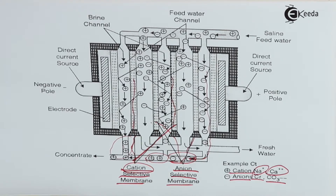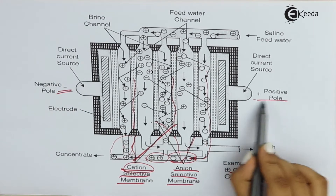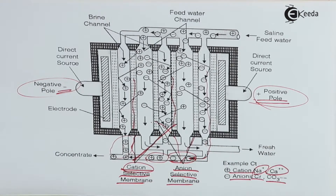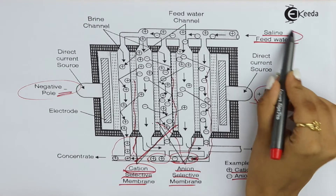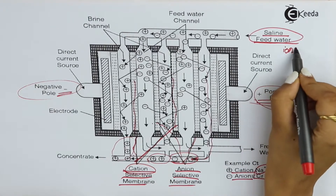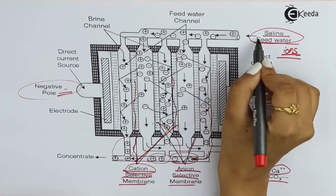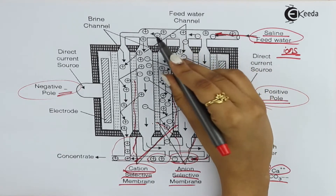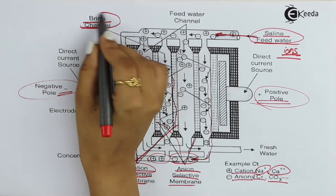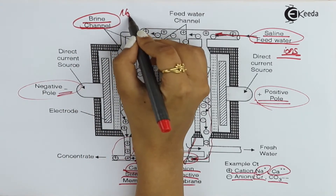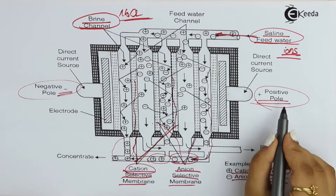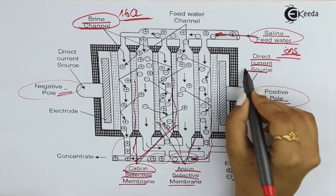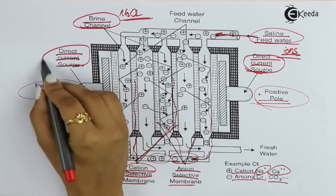The semi-permeable membranes work with the help of electricity. There is a negative pole and a positive pole which provide the potential difference, generating current. The water being processed is the saline feed water — this is the water containing all the ions that needs to be purified. It has an inlet with positive and negative ions present in it. We also have a brine solution, which is nothing but NaCl solution, in a feed water channel. The positive and negative poles supplying electricity are known as direct current sources.